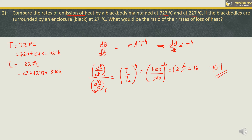Next, if the black bodies are surrounded by an enclosure which is black and at 27°C, what would be the rates of loss of heat? The temperature of the surroundings is 27°C, which converts to 300 Kelvin. When the surrounding temperature is included, the formula changes: the rate of loss of heat dQ/dt′ is directly proportional to T_body⁴ minus T_surrounding⁴.